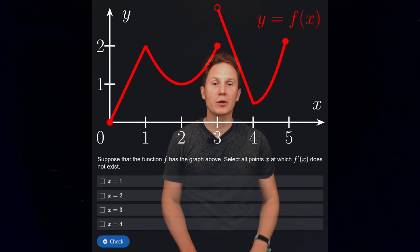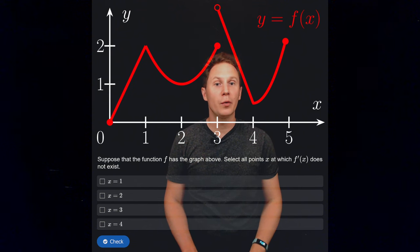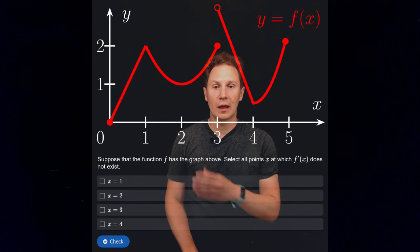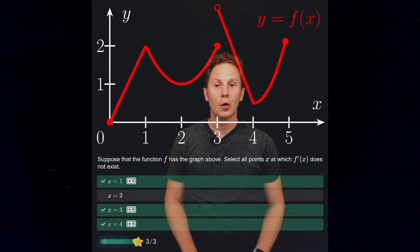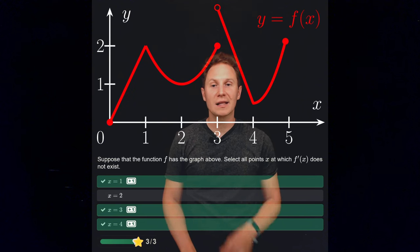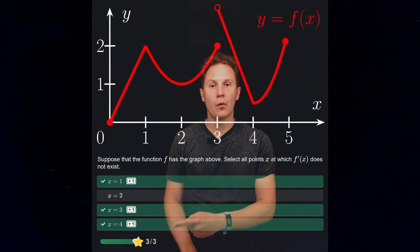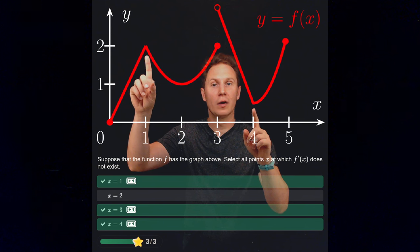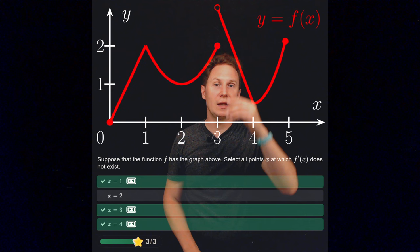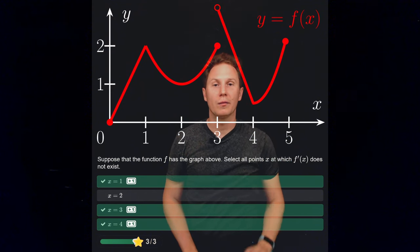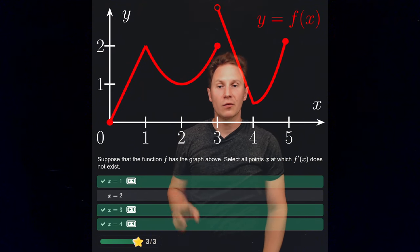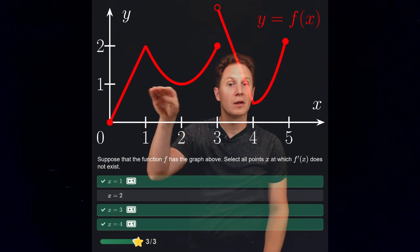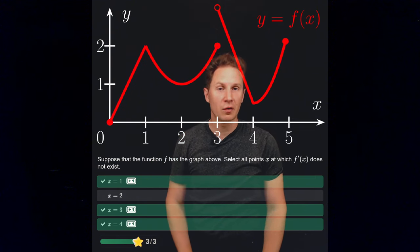Next is a different function and a different graph. Select all points x at which f'(x) does not exist. The three points are: at x = 1 and x = 4 the graph has sharp corners, whereas at x = 3 there is a jump discontinuity. It is only at x = 2 where the derivative of the function exists and is equal to 0.